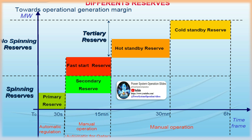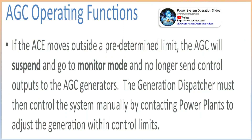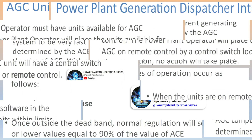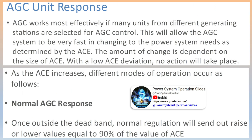Common AGC operation: having many generating stations respond to ACE load changes could also benefit the transmission system by not moving all generation changes from one location and possibly causing a transmission system overload. If the ACE is allowed to go outside the setting limits for automatic control, the AGC system will suspend and no control signals will be sent to the units. The generation dispatcher will only be able to monitor the system with no automatic actions occurring. Manual actions by the generation dispatcher will be required. The problem must be corrected manually by adjusting generation or changing schedules to bring the ACE within limits for automatic control. The generation dispatcher must not under any circumstances individually adjust schedules to bring AGC within control settings, as this action could have a negative impact on the power system.